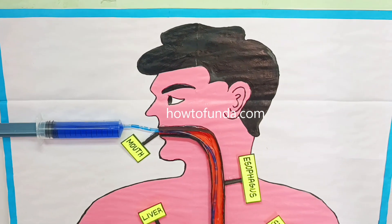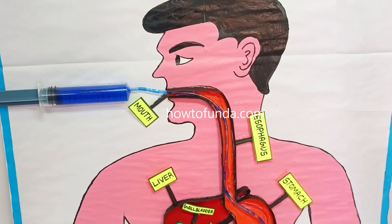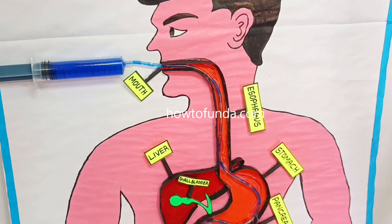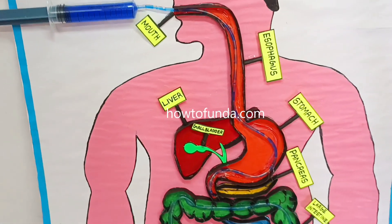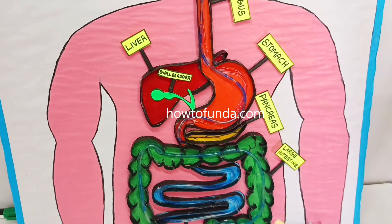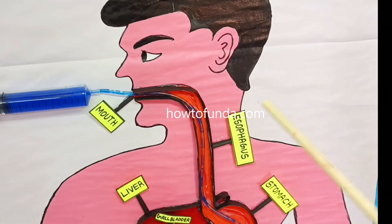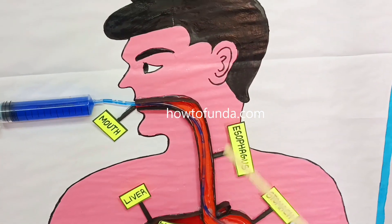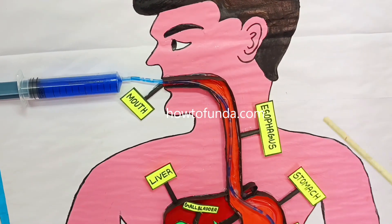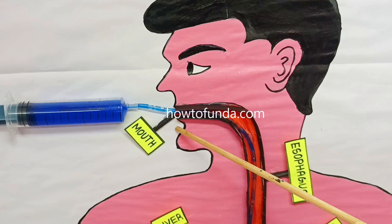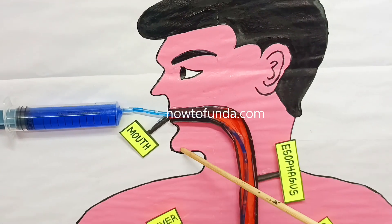Hello friends, welcome back. In this video I will be explaining all about the digestive system and its functions. The digestive system is made up of hollow organs, and the first organ in the digestive system is the mouth.